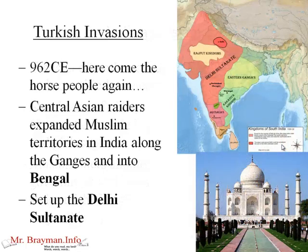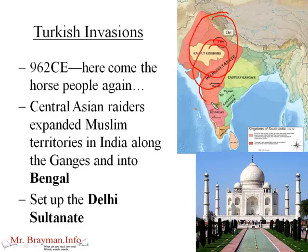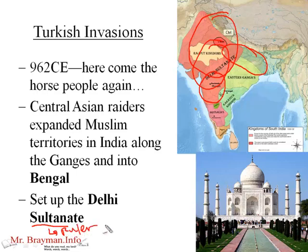Then in 962 CE, here come the horse people again — the Central Asian raiders — who start to add new territories and eventually push all the way down to southern India and along the Ganges River, setting up the so-called Delhi Sultanate. Sultan is an Arabic word meaning ruler or conqueror. This was a Muslim-run kingdom in India where the locals were Hindus and the rulers were Muslims from the West. Interestingly, the Taj Mahal, which many of us associate with India, was built by a Muslim ruler — it is not a Hindu building at all.